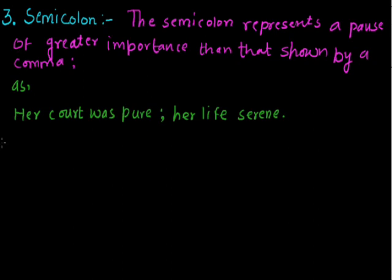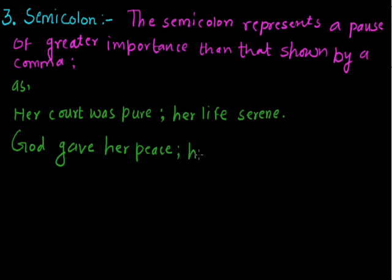One more example: 'God gave her peace; her land reposed.' Here also, the same thing happens. 'God gave her peace' is the first part of the sentence, and we have to show the importance of the second part also. That's why we have used the semicolon before the second part of the sentence.